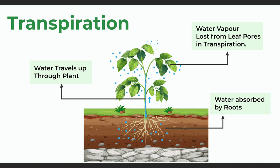2. Transpiration is the process of water movement through the plant from the roots to the leaves, where it evaporates into the atmosphere. It helps in the uptake of nutrients from the soil and cools the plant, but it can also lead to water loss, so proper watering is essential.